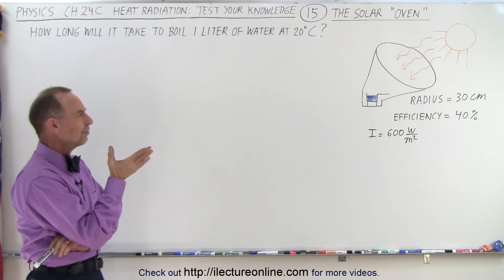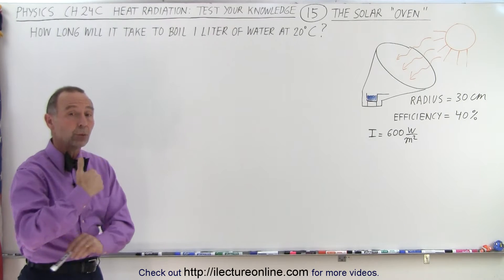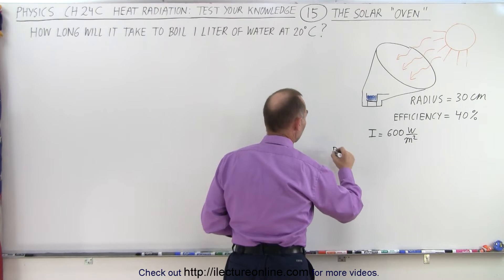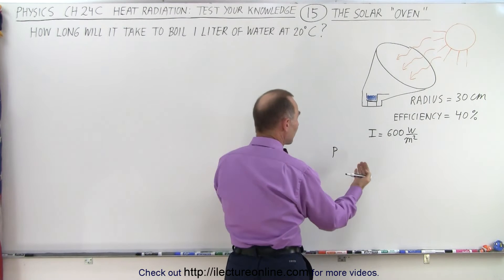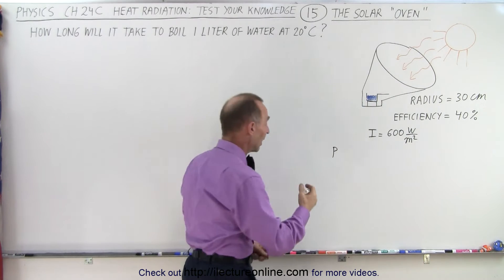How do we do that? Well, first of all, we need to figure out the amount of energy that the water will receive. So the power received, the amount of energy per unit time, that's what we want. So the power is equal to εσAT to the fourth power.